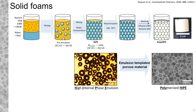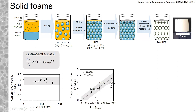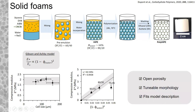We checked the mechanical properties of this material because the presence of the CNCs, which have a Young's modulus of 150 gigapascals, might have an impact. By changing the diameter of the water droplets, we measured different compressive moduli, but found no significant impact of droplet diameter on this modulus, as predicted by the Gibson-Ashby model. By varying the water fraction from 75% to 85%, the results fit the model except at low densities. In the end, we obtained porous solids with open porosity and tunable morphology in terms of cell size and density.